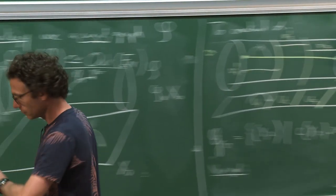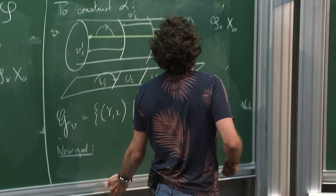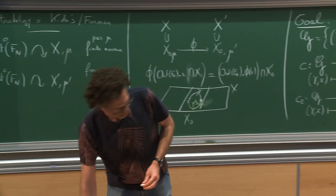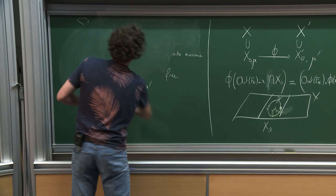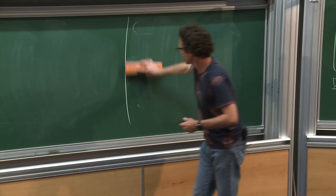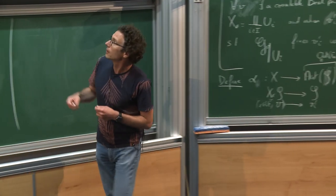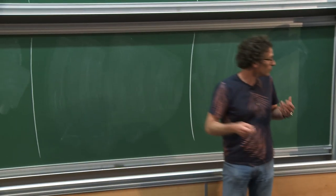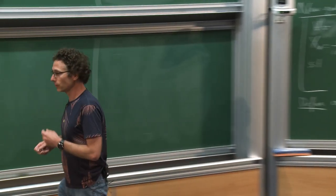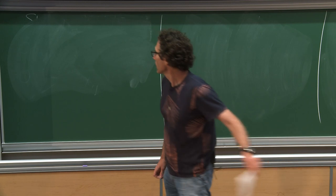Up to now I didn't talk about Out(Fn) specifically — it's a general strategy. And now I can start with Out(Fn). The moral is: you want to understand stabilizers of vertices of this graph, and you want to prove that using the other co-cycle, it also fixes a vertex in the graph. That's essentially the point. So concretely, what do we take for S?